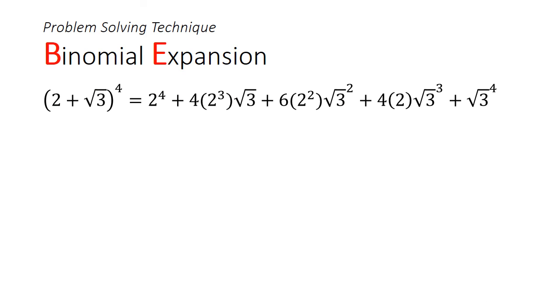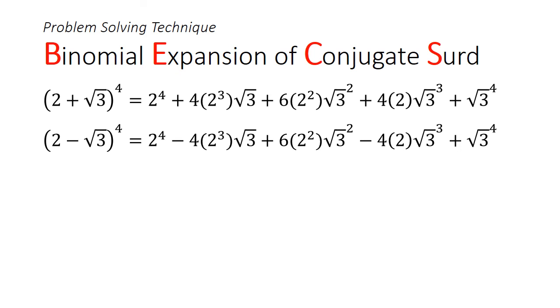Now, to solve this problem, we could try expanding this term with binomial theorem. However, you will notice a slight problem as the second and fourth term cannot be evaluated without a calculator. What we could do here is to expand the conjugate term by the same power of 4. Notice now that the second and fourth term highlighted in red have opposite signs.